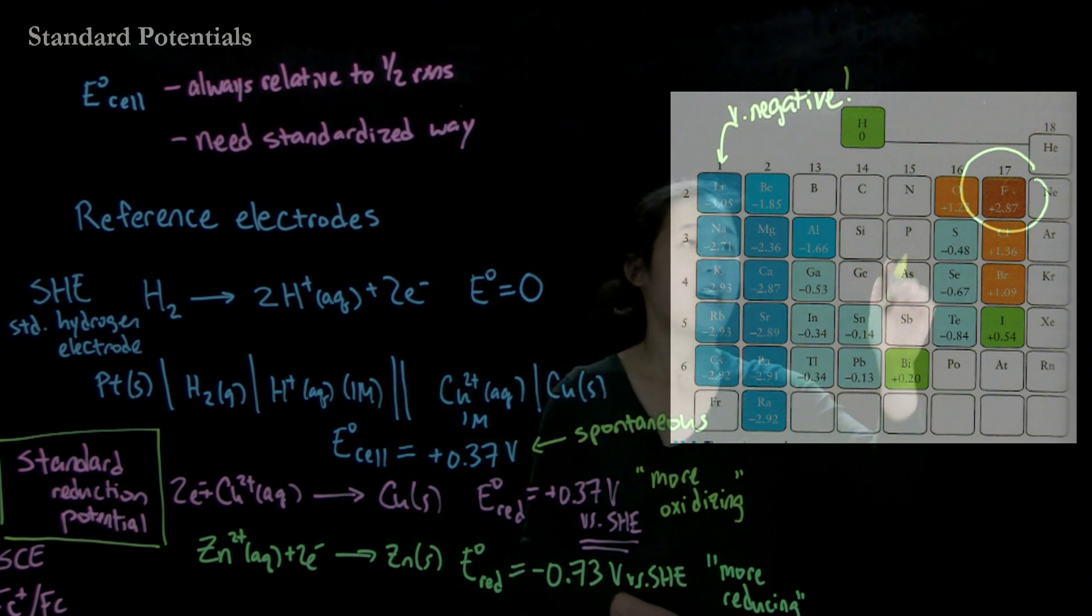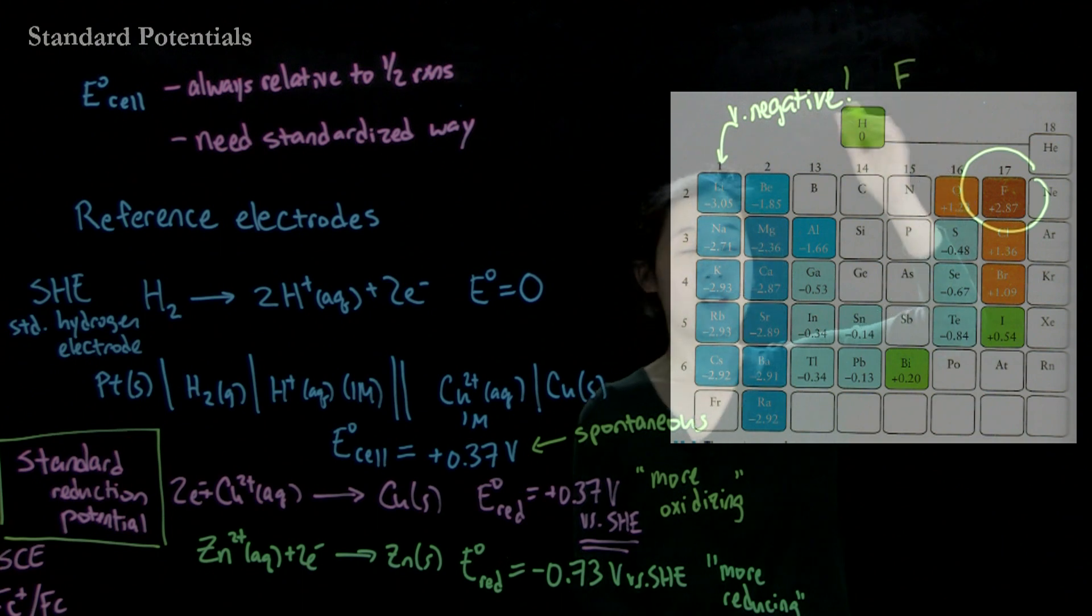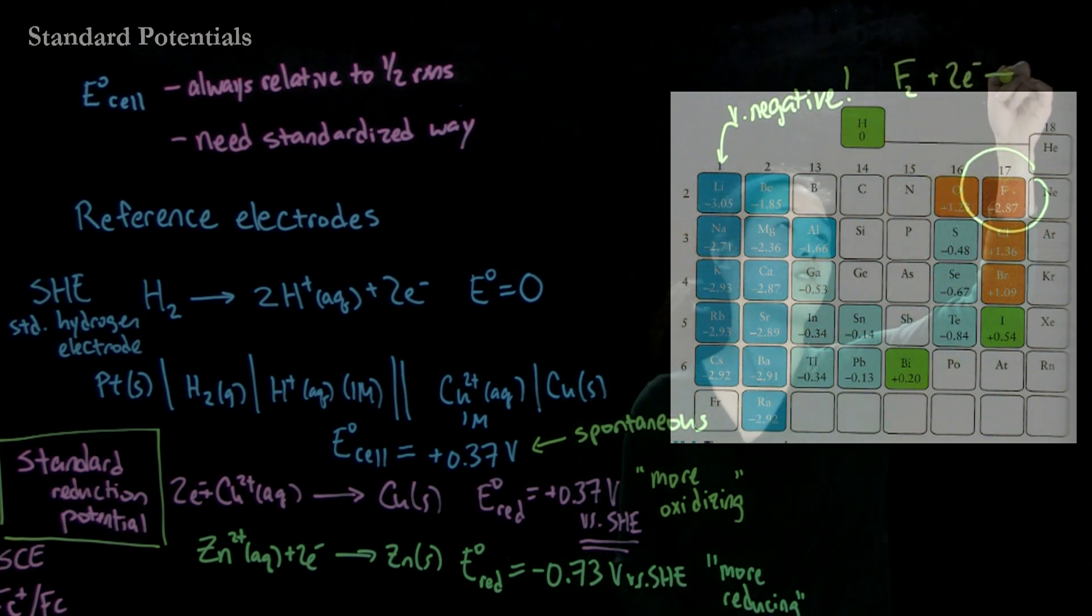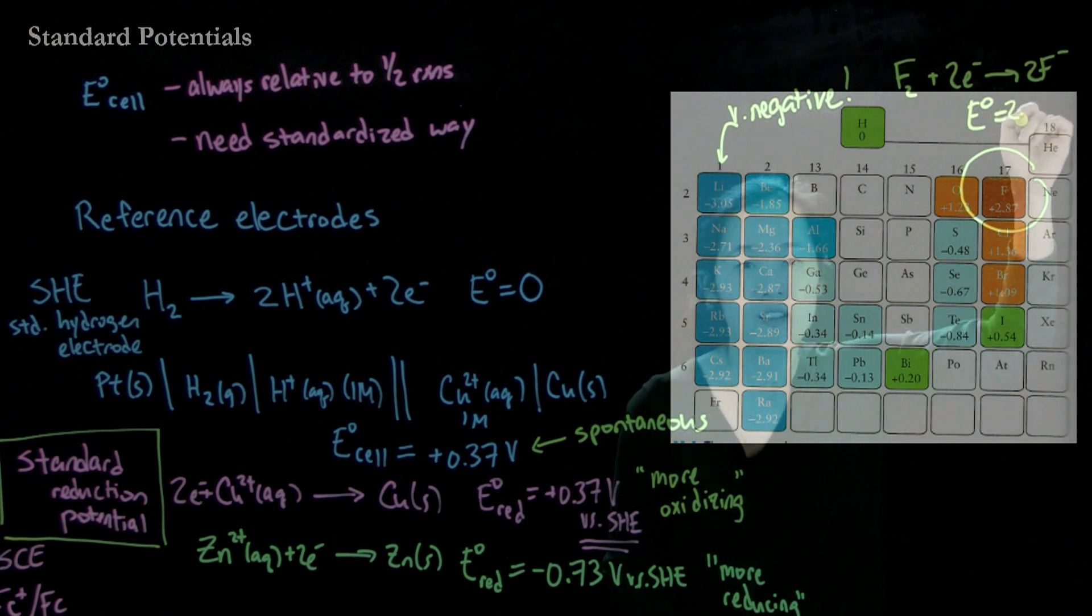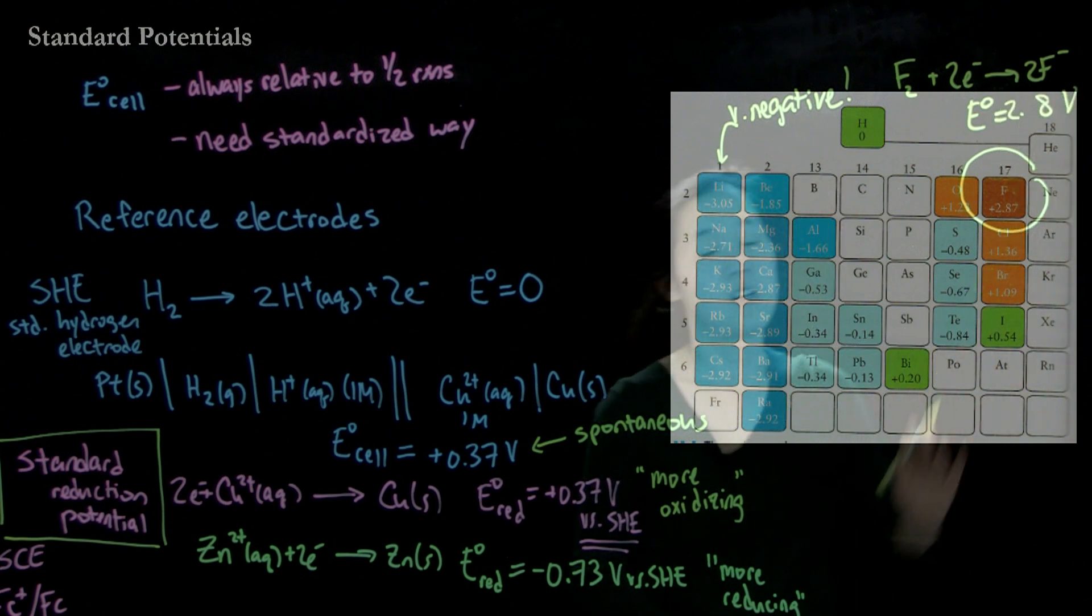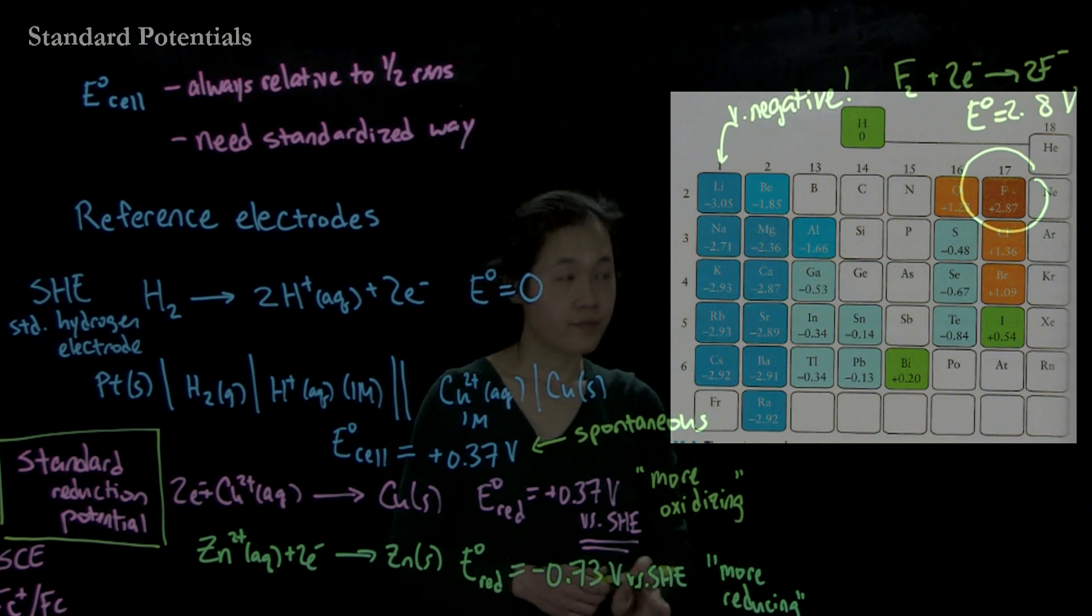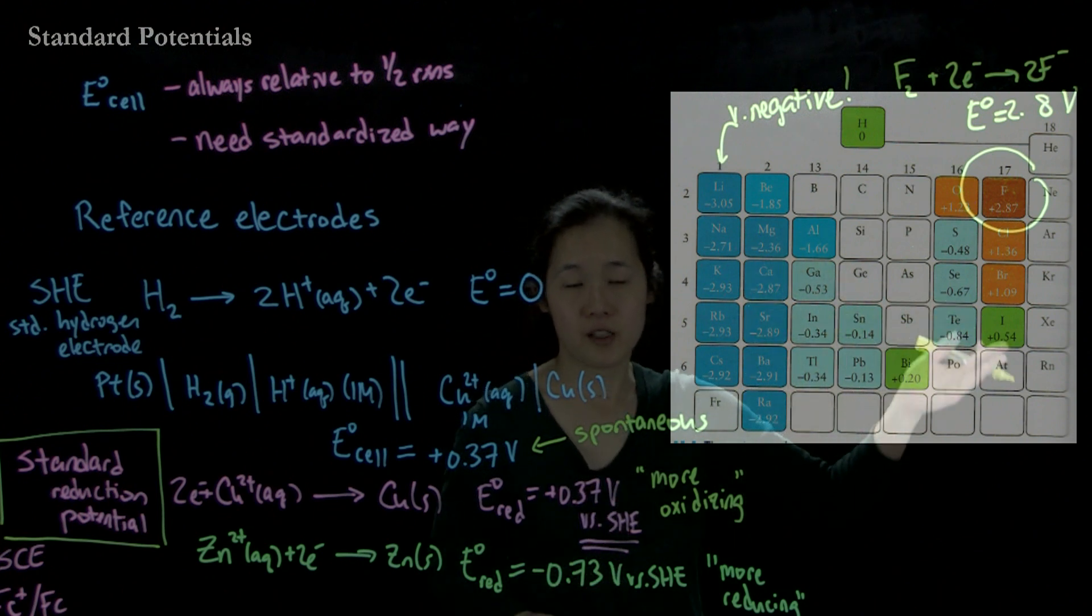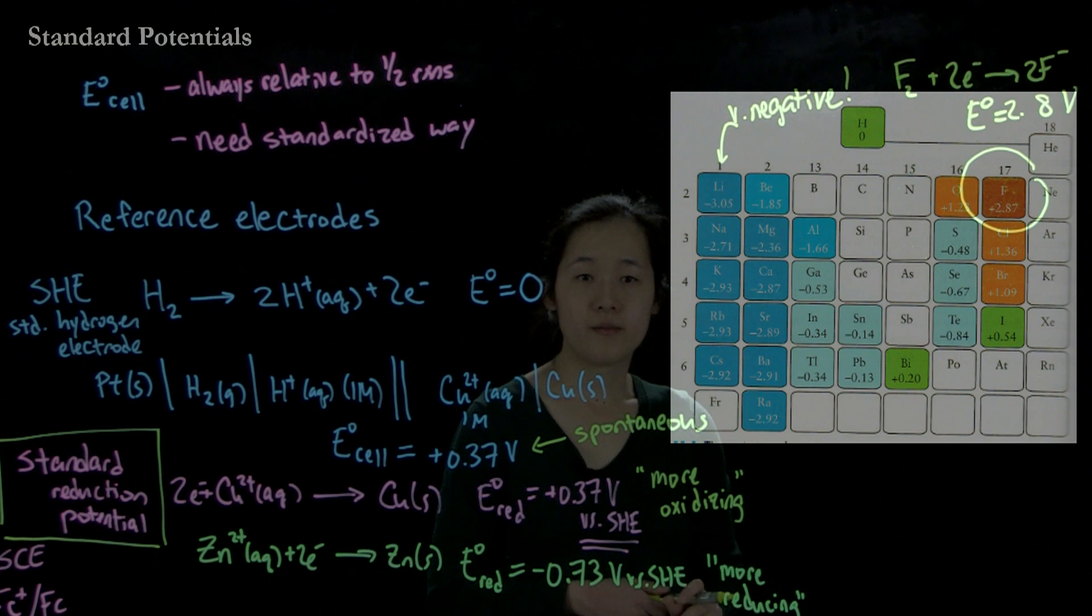Very, very positive. So what we're saying here is that the reduction potential of F2 plus 2 electrons goes to 2F minus has this potential - 2.8 something volts. So this is very, very oxidizing. And so we can use these periodic trends to rationalize chemical behavior and electrochemical behavior as well.